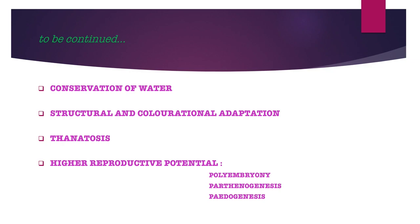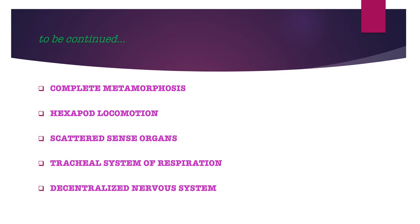Many insects also have polyembryony, in which a single egg hatches to produce many individuals. Parthenogenesis is reproduction without a male or without fertilization. Paedogenesis means individuals can reproduce even when they are immature. Most insects undergo complete metamorphosis with four stages. All developmental stages have different food sources, so there is less competition for food among them.